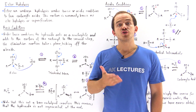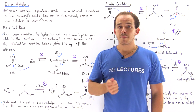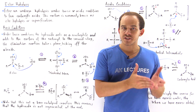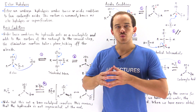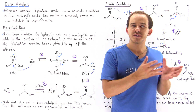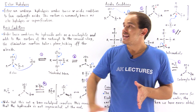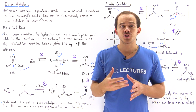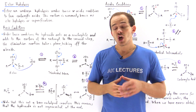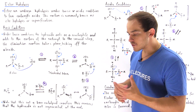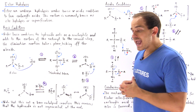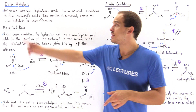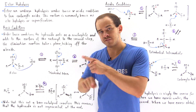Ester hydrolysis, also known as saponification, is basically the reaction in which we transform an ester reactant into a carboxylic acid product. Ester hydrolysis is essentially the reverse of the Fischer esterification process. Recall that in Fischer esterification, we transform a carboxylic acid into an ester product, and in ester hydrolysis, we go in reverse.